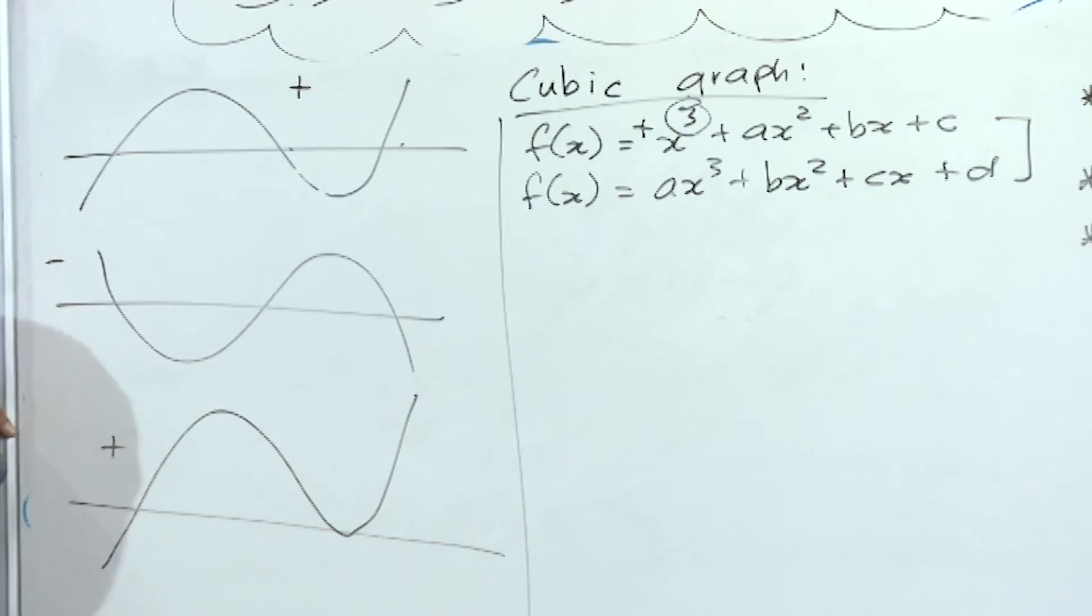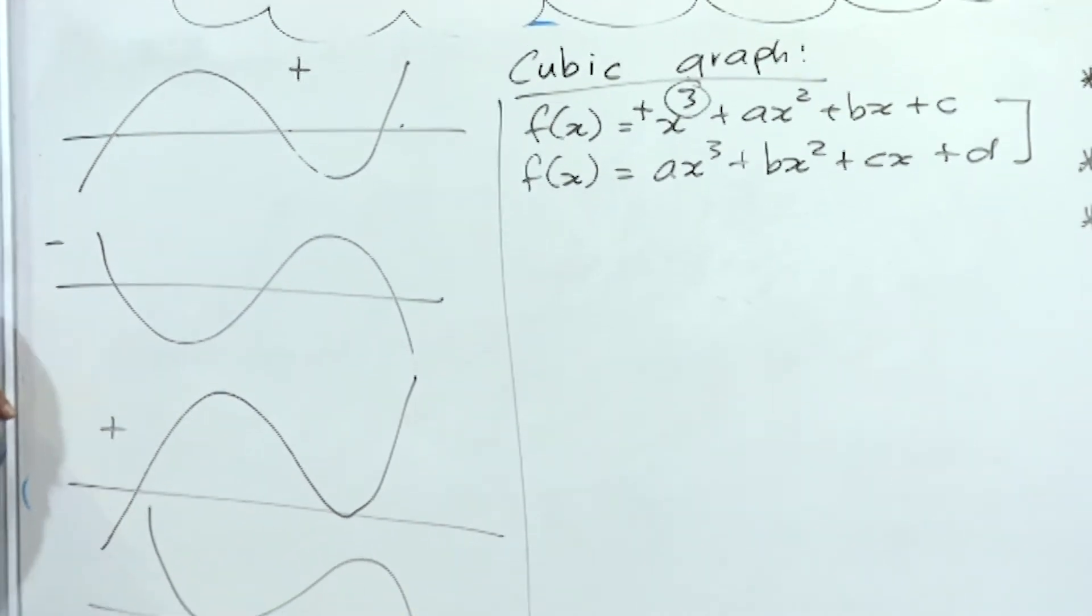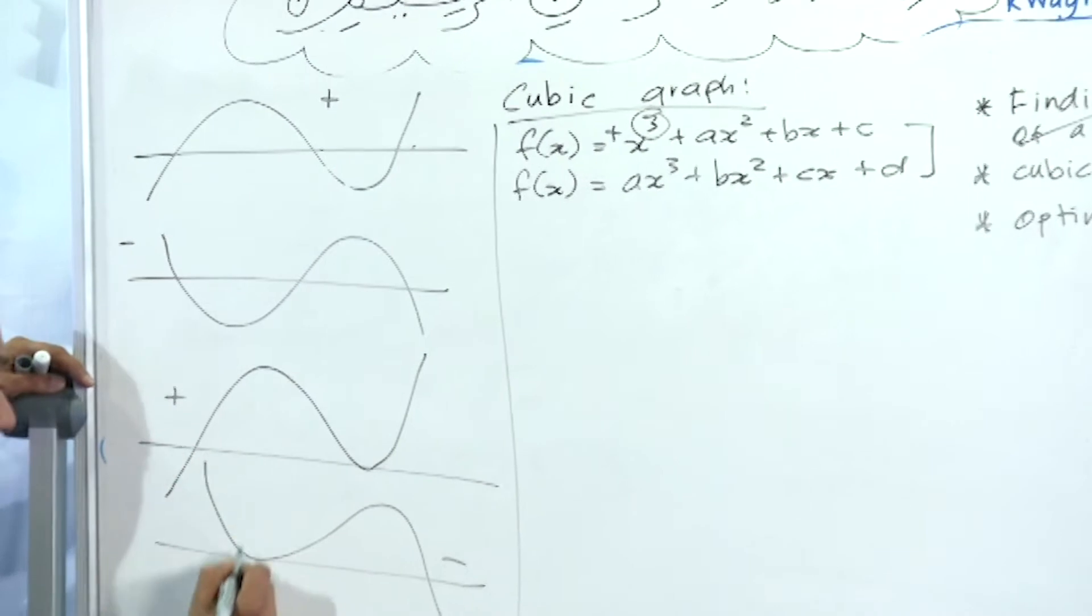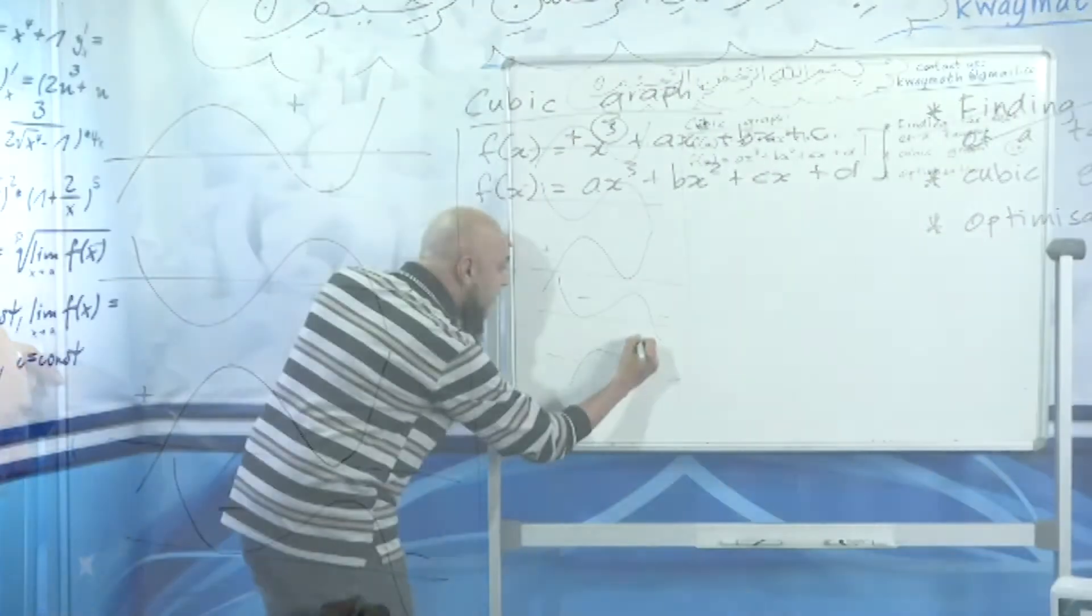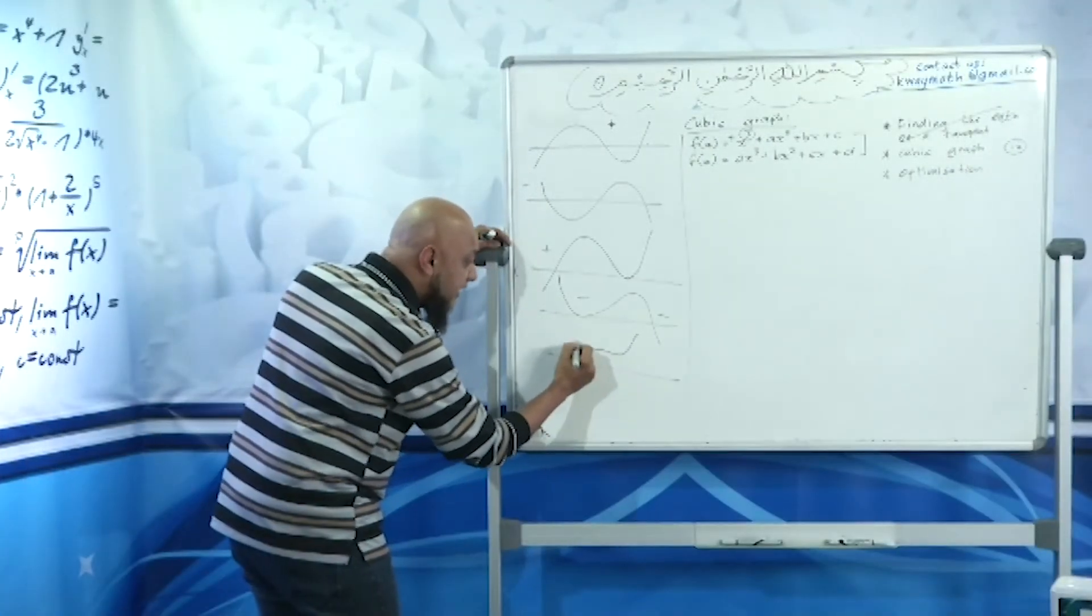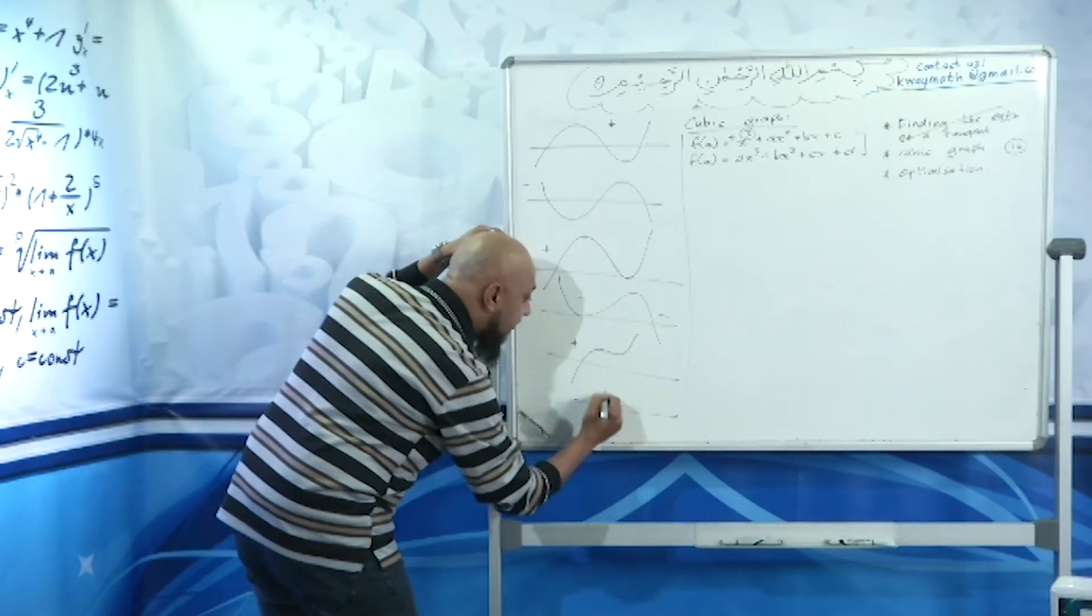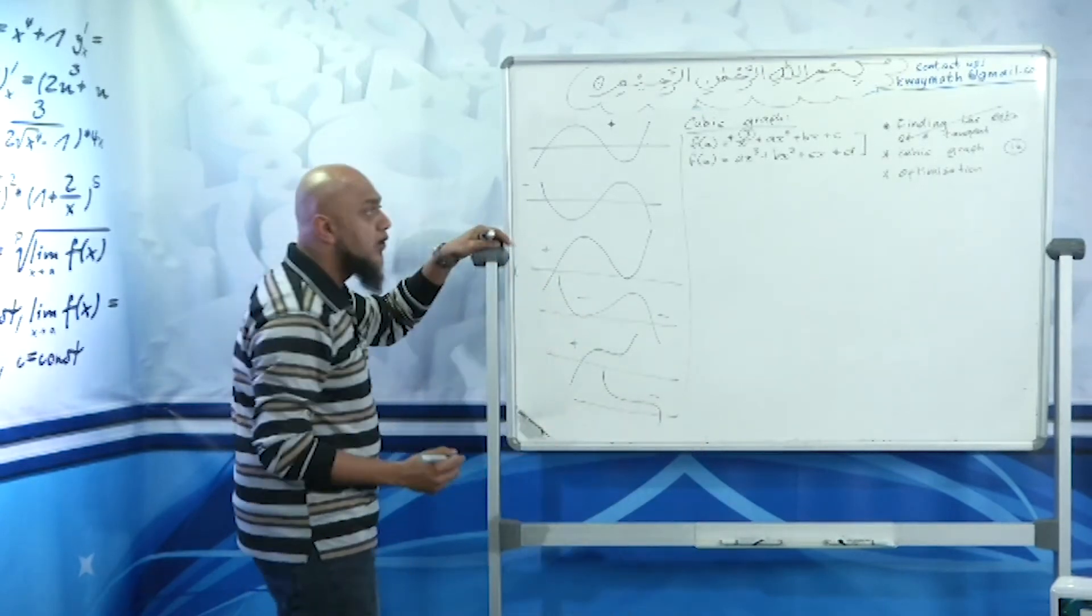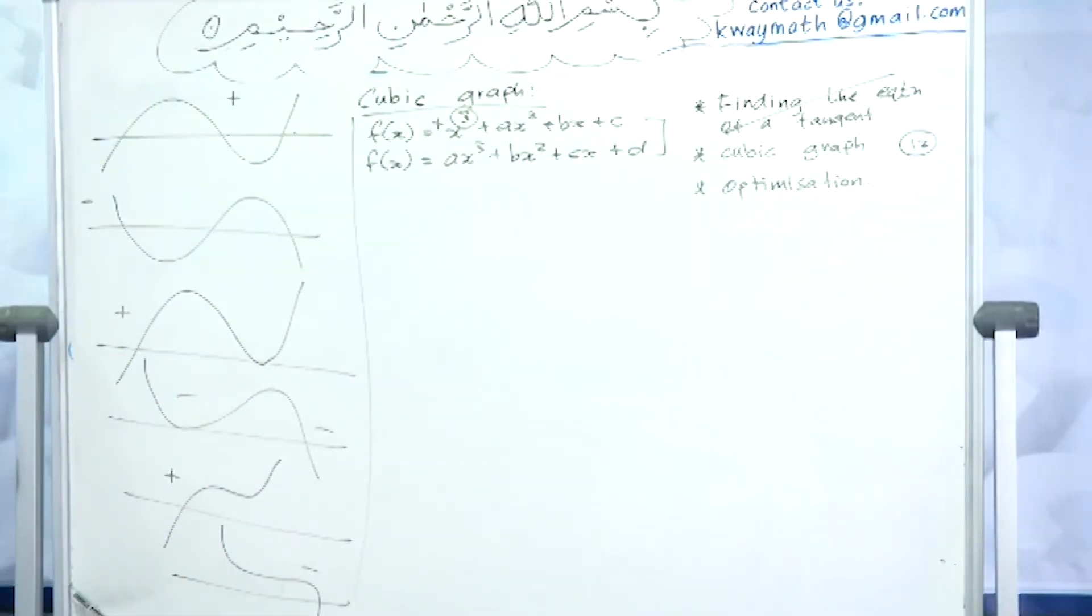If it's got only one x-intercept, the positive graph would look like that with two turning points, and the negative graph would look like this.